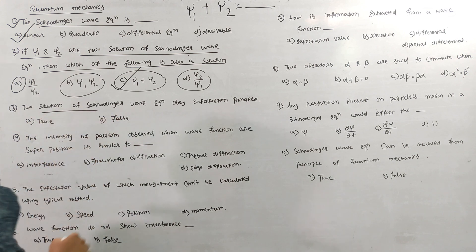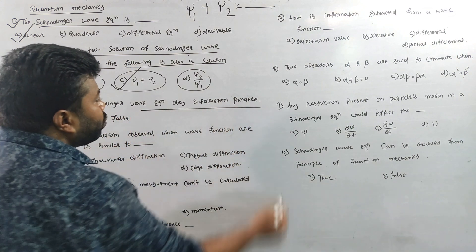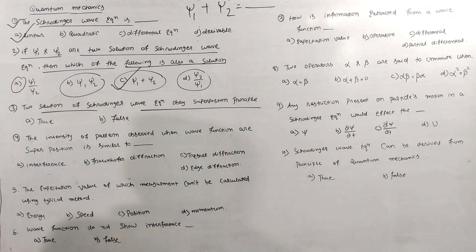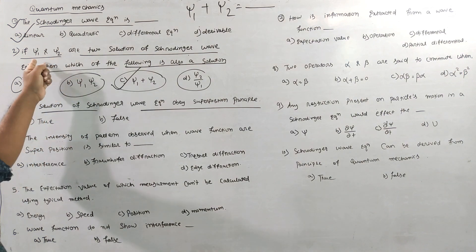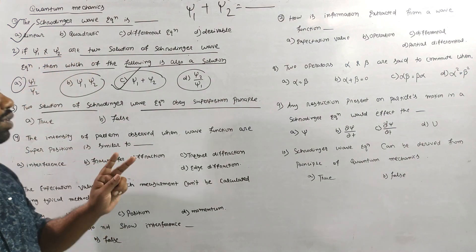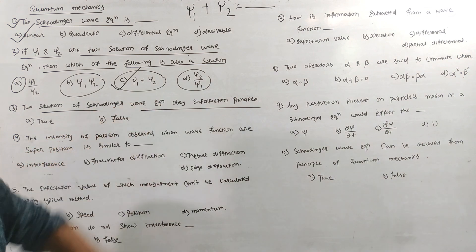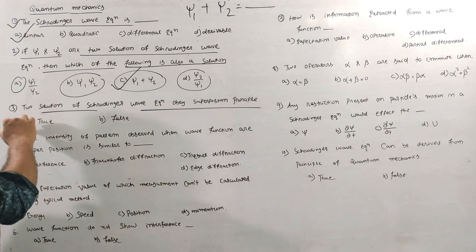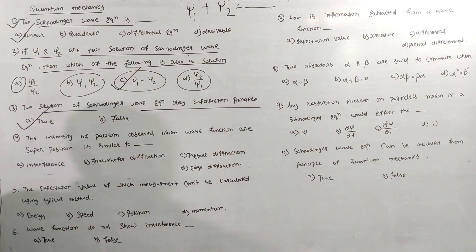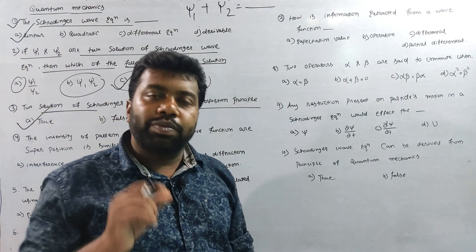The two solutions of the Schrödinger wave equation obey the superposition principle. If ψ1 and ψ2 are solutions, the Schrödinger wave equation follows the superposition principle. True or false? The answer is true, because the Schrödinger wave equation satisfies the superposition principle.